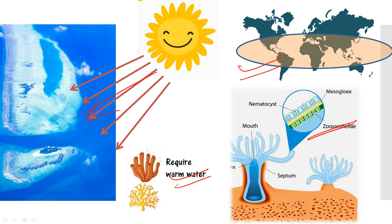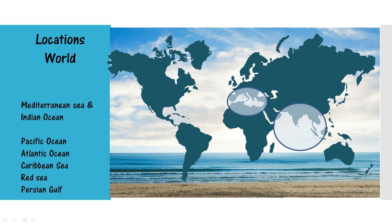The largest coral reef is the Great Barrier Reef near Australia. More than half of the world's coral reefs are found in the Mediterranean Sea and Indian Ocean region, and the rest are found in the Pacific Ocean, Atlantic Ocean, Caribbean Sea, Red Sea, and Persian Gulf.